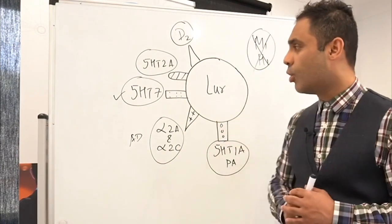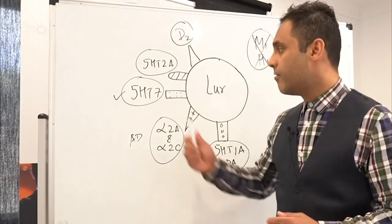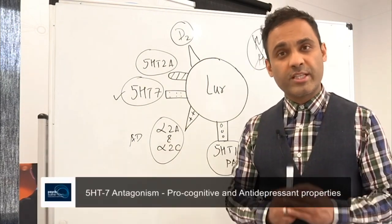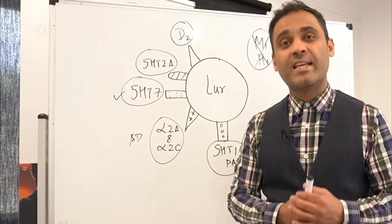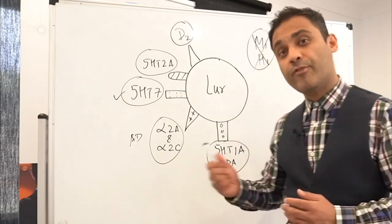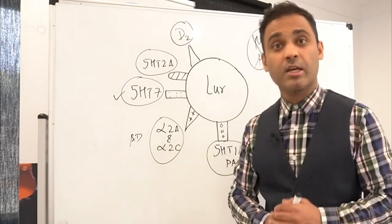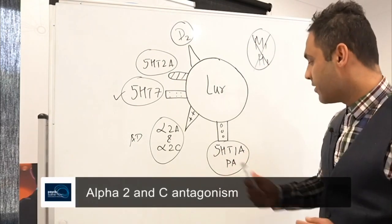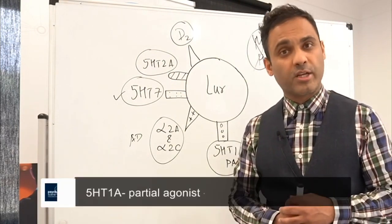But lurasidone also tends to have some unique receptor activity: 5HT7 antagonism. This receptor antagonism gives it a pro-cognitive and antidepressant property. Further antidepressant properties come from alpha-2A and alpha-2C antagonism, and 5HT1A partial agonism gives it a further antidepressant property.